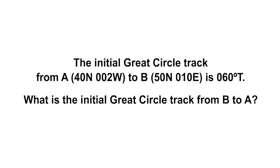Let's try some practical examples. Here is a typical problem: What is the initial great circle track from A, which is at 40 north and 2 west, to B, at 50 north and 10 east, is 060 degrees true. What is the initial great circle track from B to A? Start by drawing a diagram. It is only a sketch to get the situation in your mind, not a scale drawing.